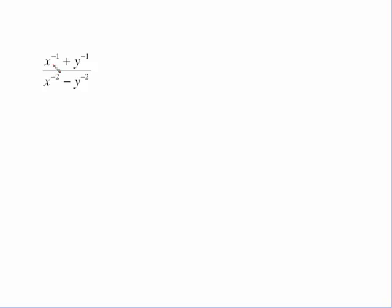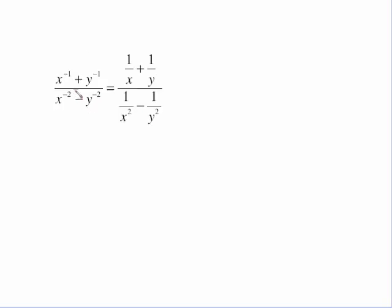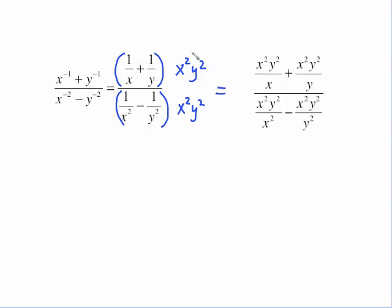This example has a lot of negative exponents, so we rewrite: x⁻¹ becomes 1/x, y⁻¹ becomes 1/y, and the other two terms become 1/x² and 1/y². Now find the common denominator — the rule is to take the highest power present, so the common denominator is x²y². We multiply by x²y² and distribute. x²y² times 1 is just x²y² over each denominator.